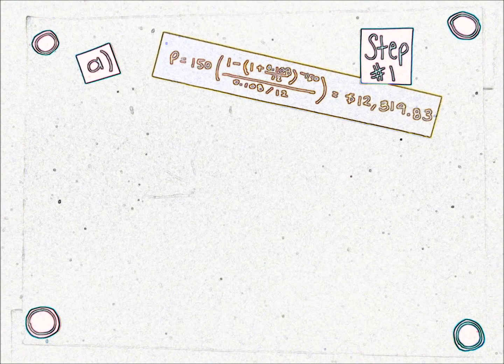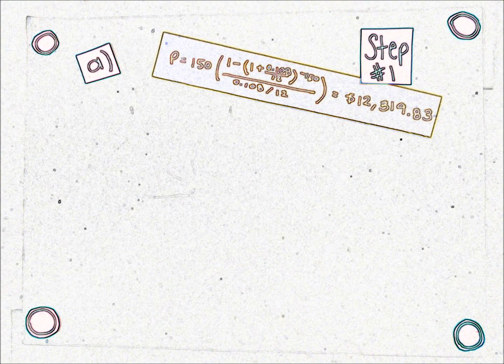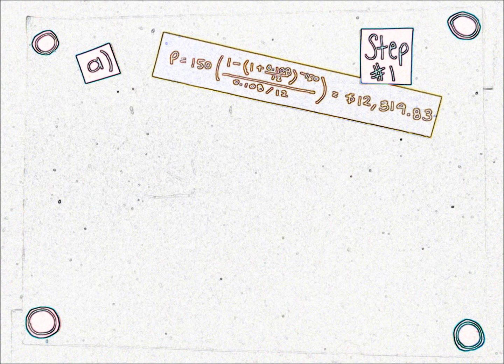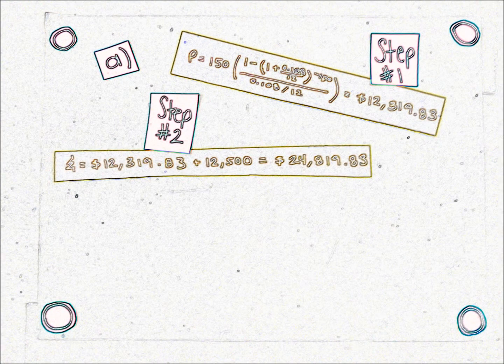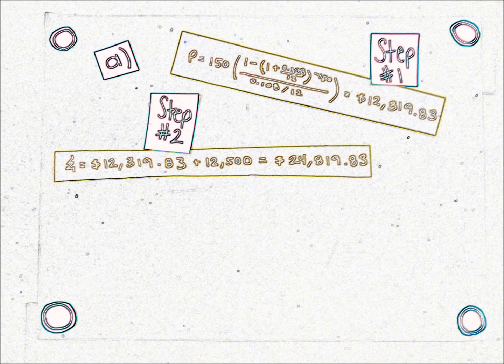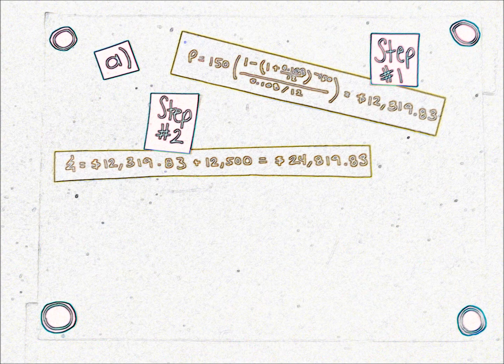Now we're going to do it the second way. Only this time we're using the present time formula, and we will substitute the same values because we already know them. Only this time we're using the $150 contributions in order to know their present value. We get this result and now we add the $12,500. That's the result for A. But it's looking rather suspicious, isn't it?